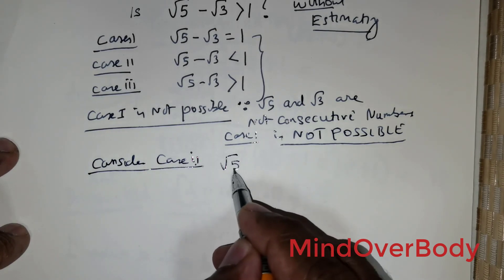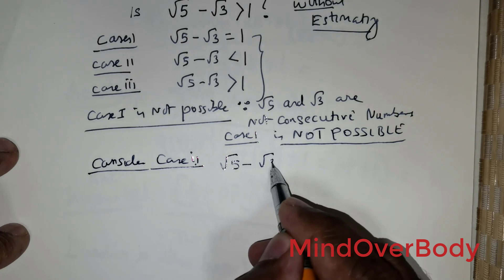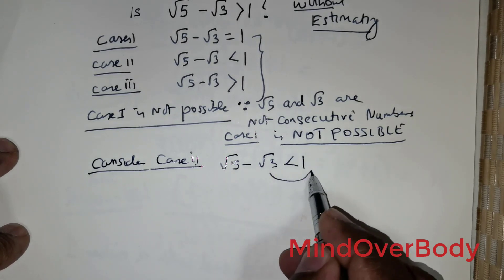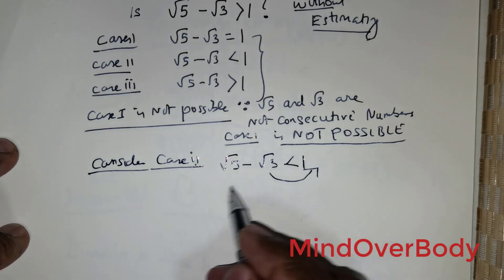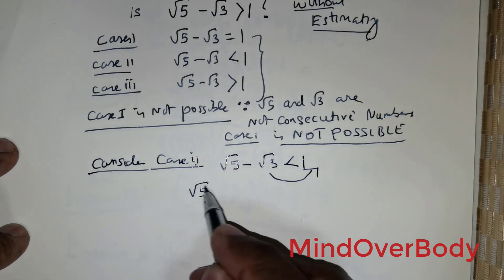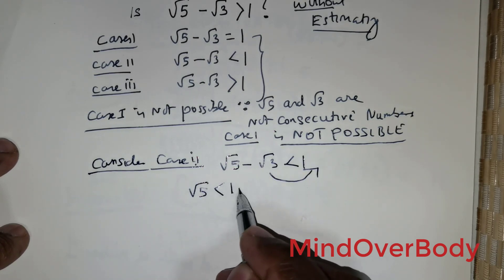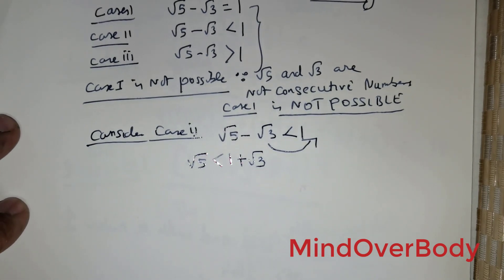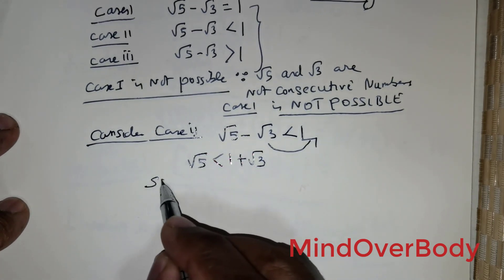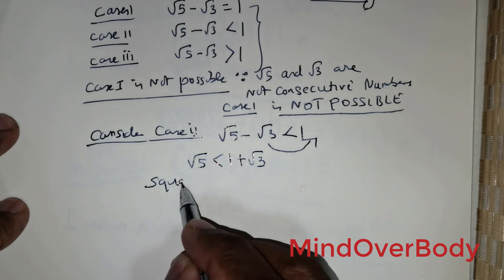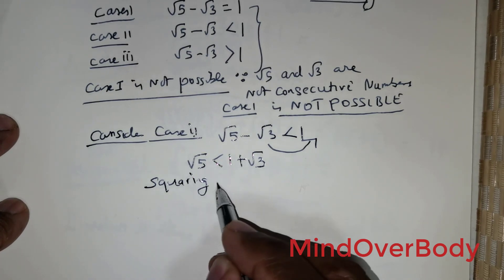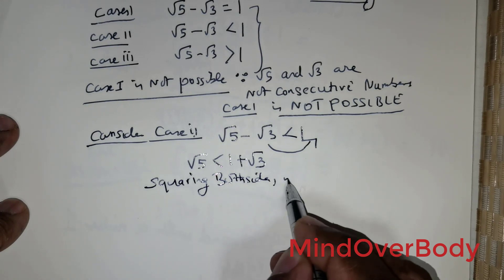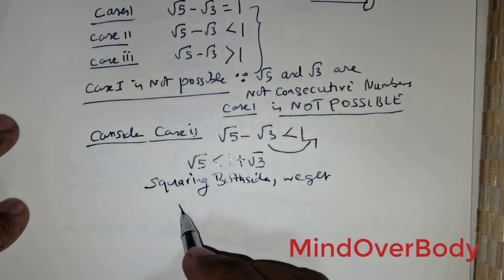Let us consider Case 2: root of 5 minus root of 3 is less than 1. Moving root of 3 to the other side, we get root of 5 is less than 1 plus root of 3.